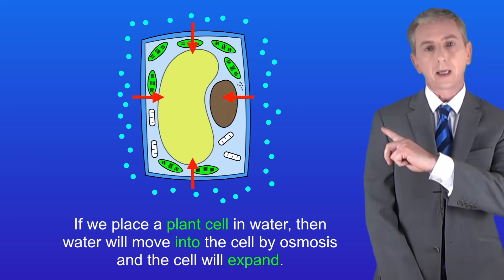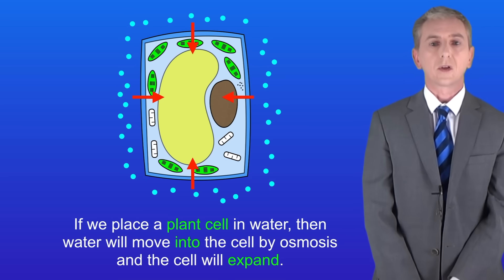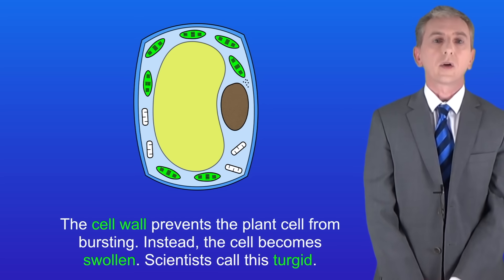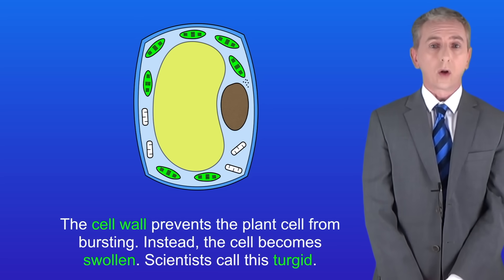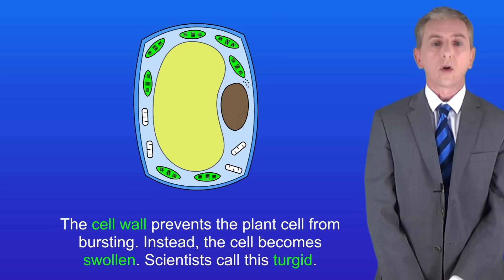I'm showing you a plant cell here. If we place a plant cell in water then again water will move into the cell by osmosis and the cell will expand like this. Now the key point here is that the cell wall prevents the plant cell from bursting. Instead the cell becomes swollen and scientists call this turgid.